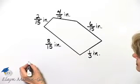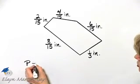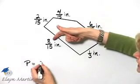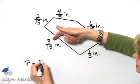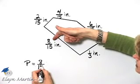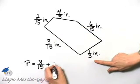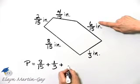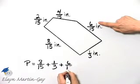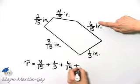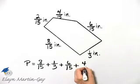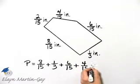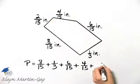So remember, perimeter means distance around, so the perimeter will be 8-15ths of an inch. I'll simply write 8-15ths for now, plus 1-3rd of an inch, plus 6-15ths, plus 4-15ths, plus 2-15ths.